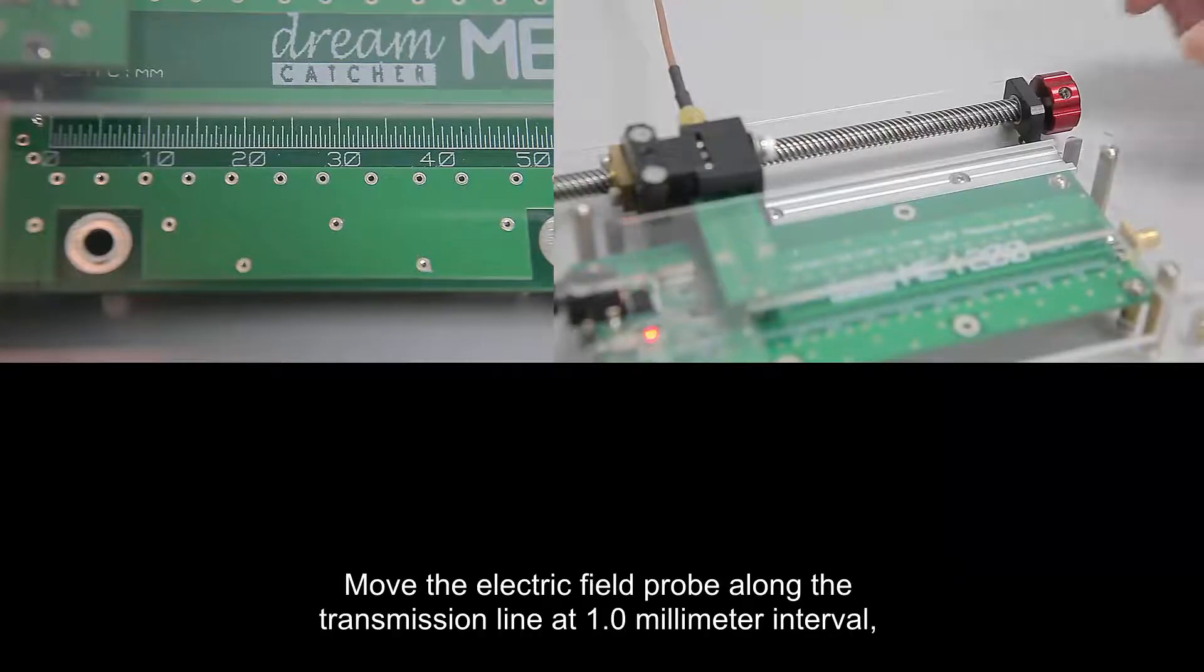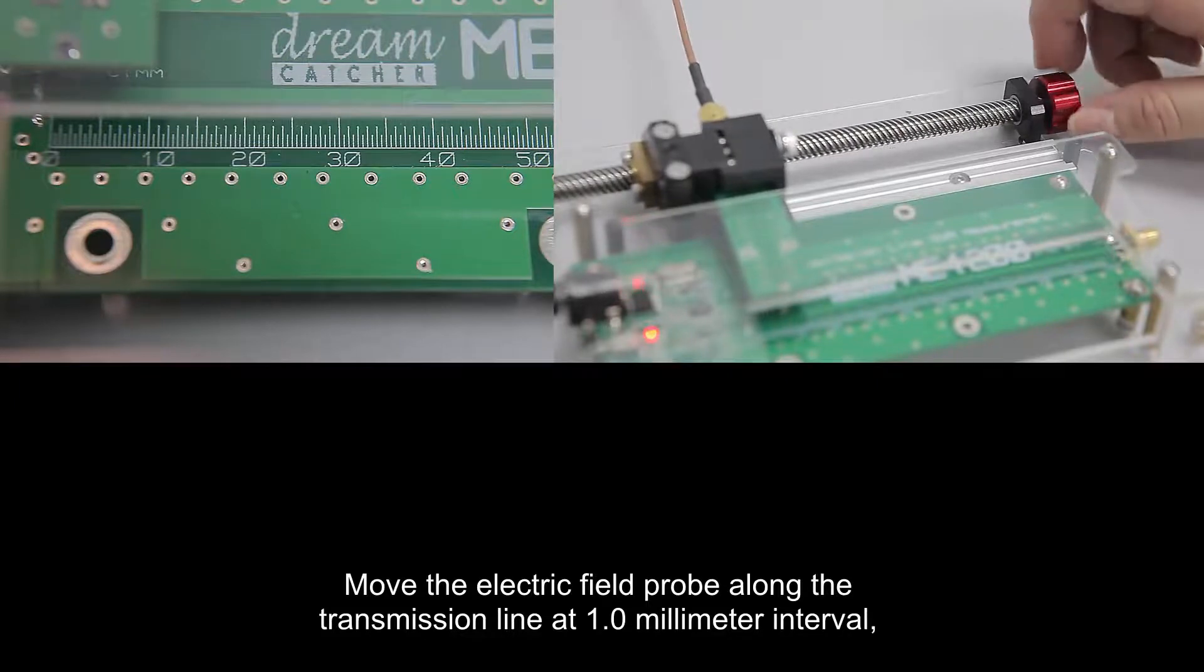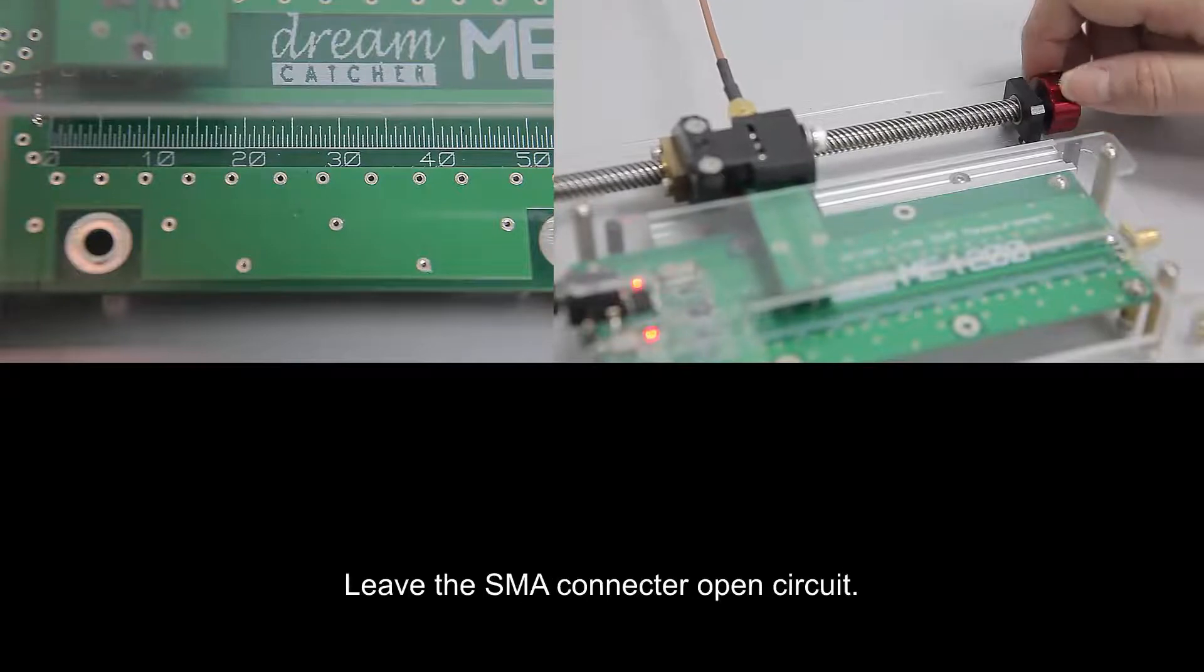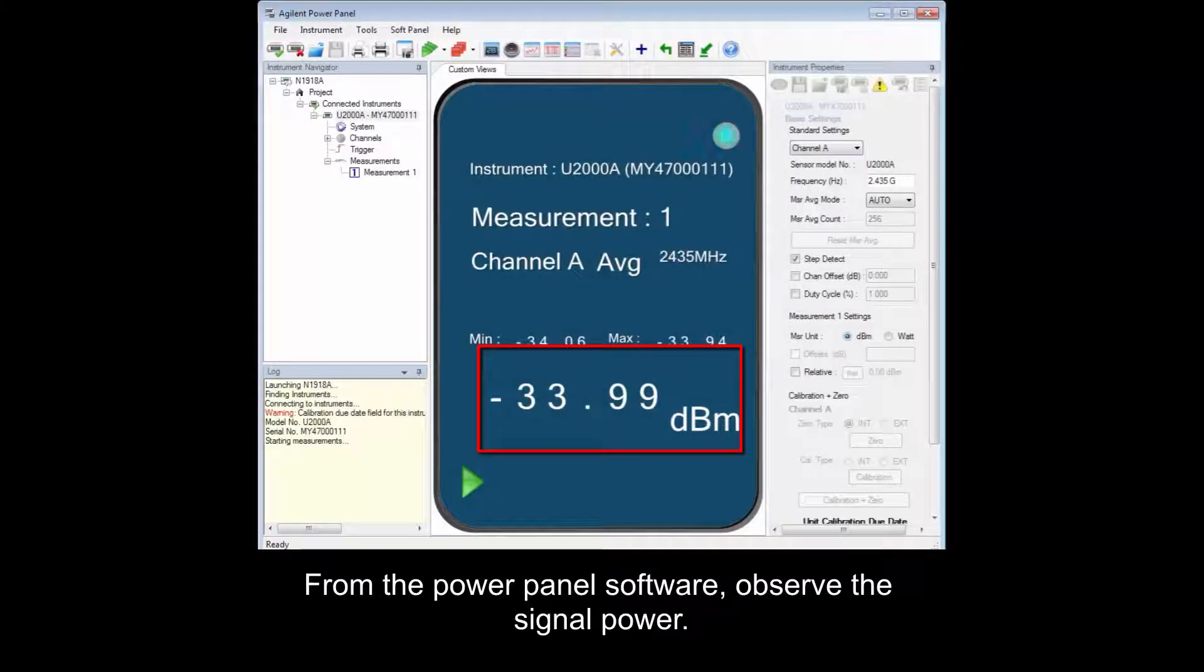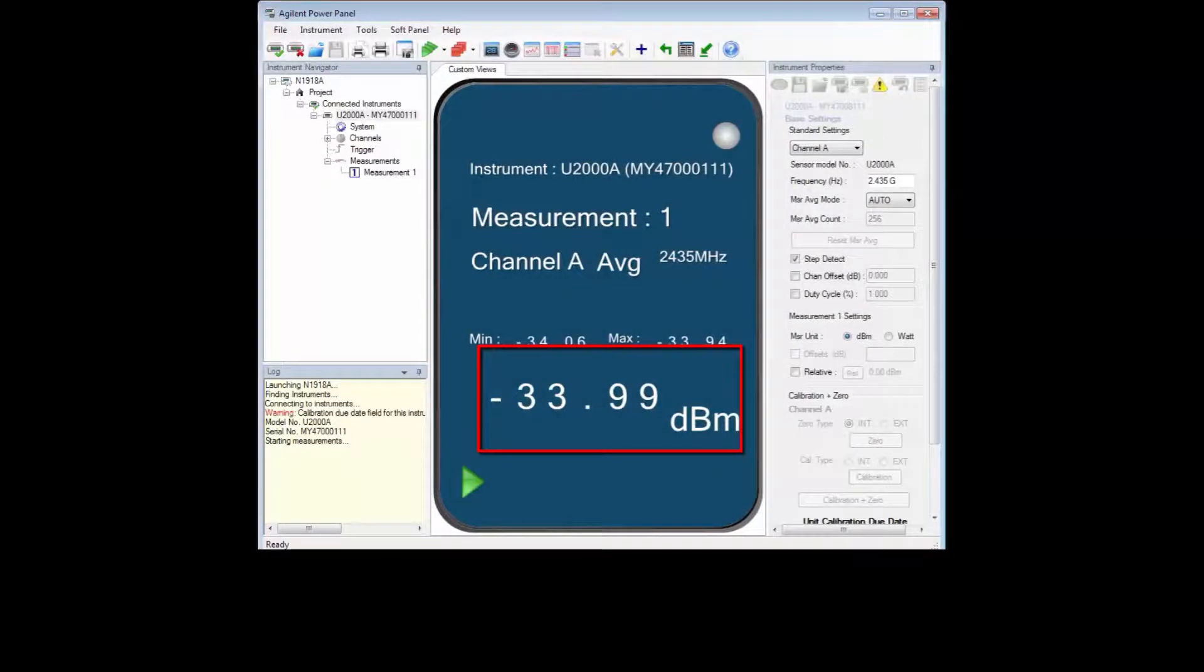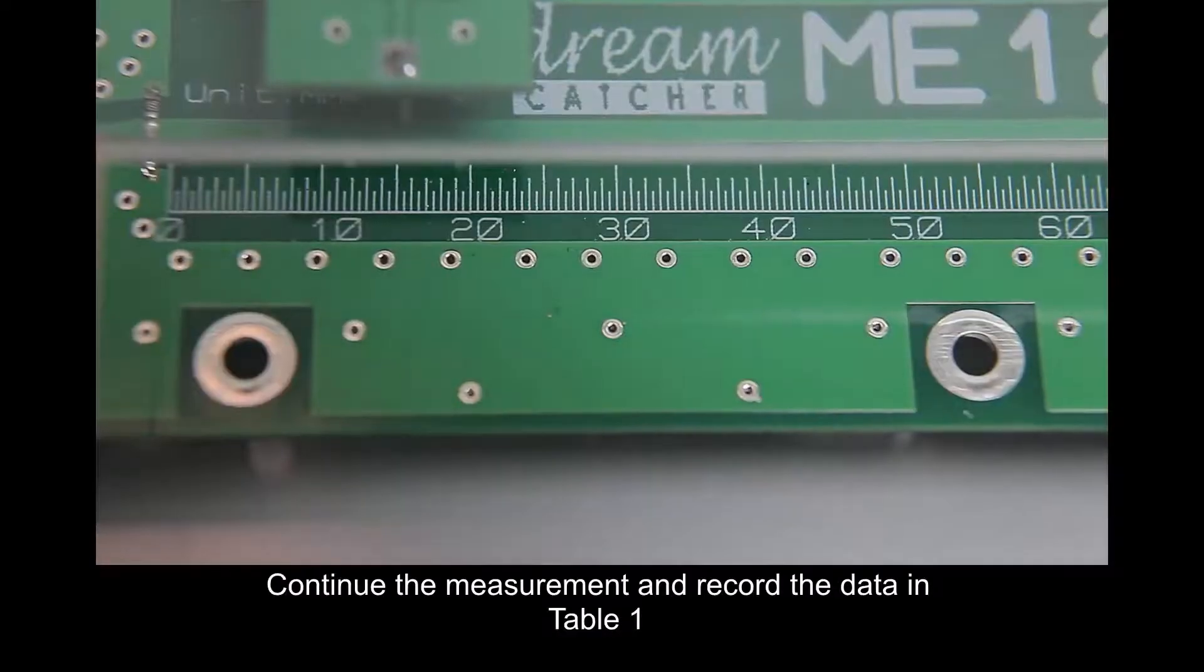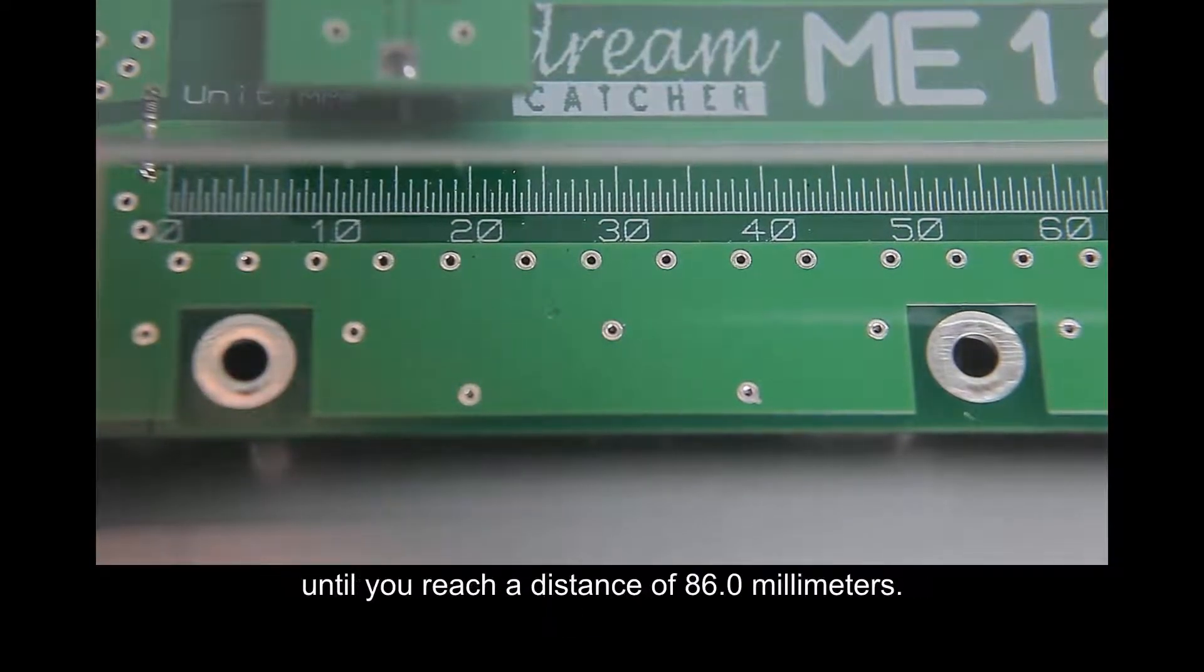Move the electric field probe along the transmission line at 1.0 mm interval, beginning at 16.0 mm. Leave the SMR connector open circuit. From the power panel software, observe the signal power. Record the value of the power captured at 16 mm in table 1. Continue the measurement and record the data in table 1 until you reach a distance of 86.0 mm.